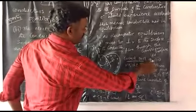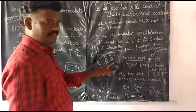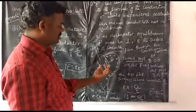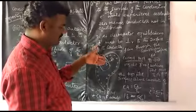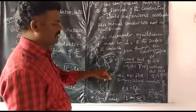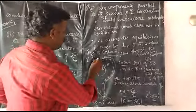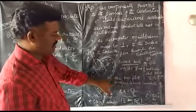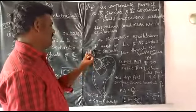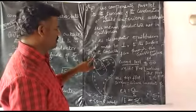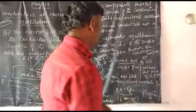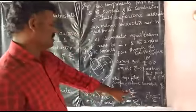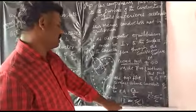The bottom portion of the Gaussian surface is immersed inside the conductor where there is no electric field, so there is no flux there either. Only the top flat surface of the Gaussian surface contributes to the electric flux, because the electric field vector and dA vector are parallel (θ = 0°, cos 0° = 1). So E·A = Q / ε₀. Since Q = σA (where σ is the surface charge density), we get E·A = σA / ε₀, and therefore the electric field E = σ / ε₀.